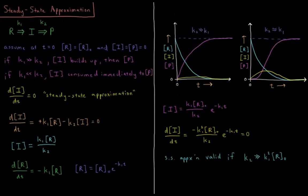This video will discuss the steady state approximation in chemical kinetics. We have a reaction going from reactant R to product P, composed of two elementary steps. Step one: R goes to I with rate constant K1. Step two: I goes to P with rate constant K2, where I is the intermediate. At T equals zero, the concentration of the reactant equals R naught, and the concentration of the intermediate and product are equal to zero.